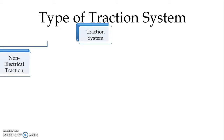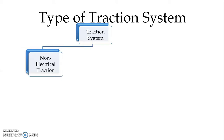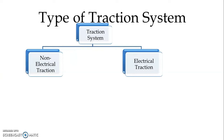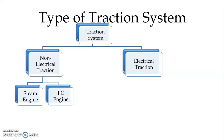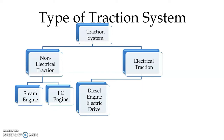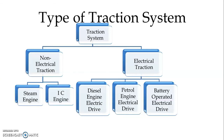Now let us consider the classification of different types of traction systems. Traction systems are broadly classified into two categories: non-electrical traction systems and electrical traction systems. In the case of non-electrical traction systems, we have the steam engine and IC engine. In the case of electrical traction systems, we have diesel engine electric drive, petrol engine electric drive, battery operated electrical drive, and electrical drive. We will see the advantages and disadvantages of all the systems one by one.